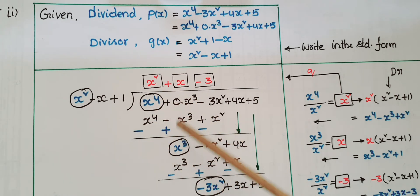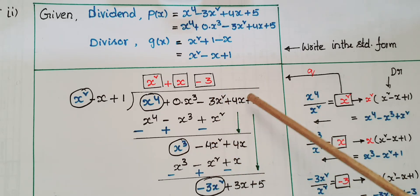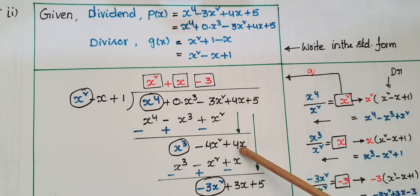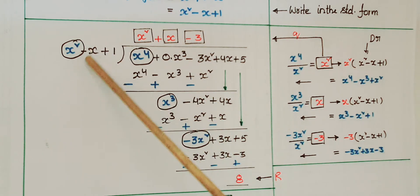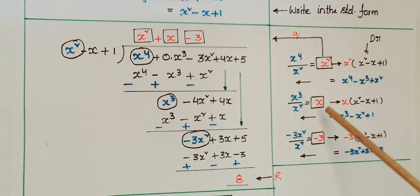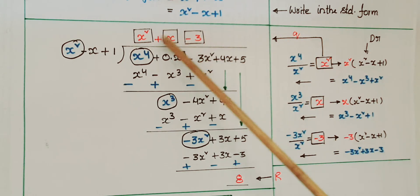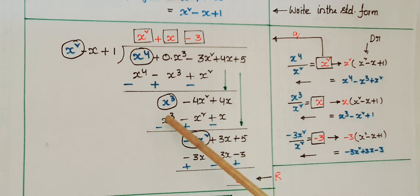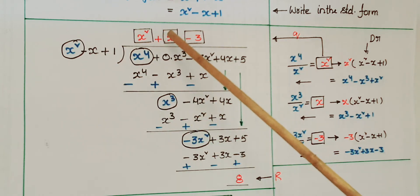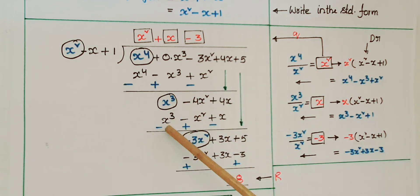After subtraction: 0 + x³ = x³, and -3x² - x² = -4x². Bring down +4x. Take x³ divided by x² = x. Write +x at the quotient place. Multiply x with (x² - x + 1): x³ - x² + x. Change signs and subtract: x³ - x³ = 0.